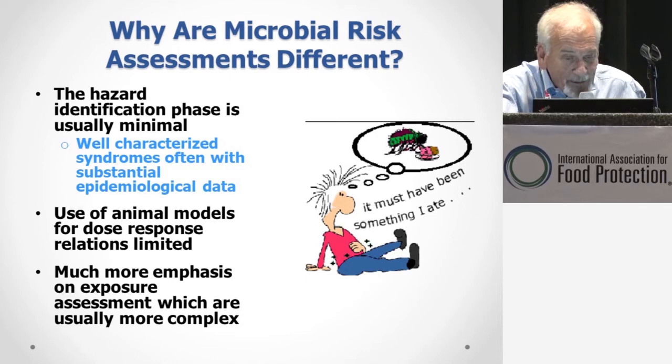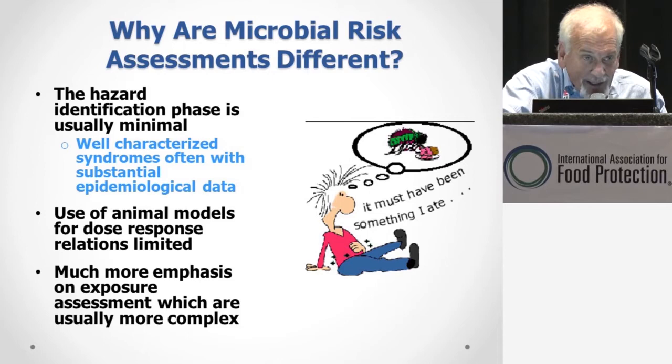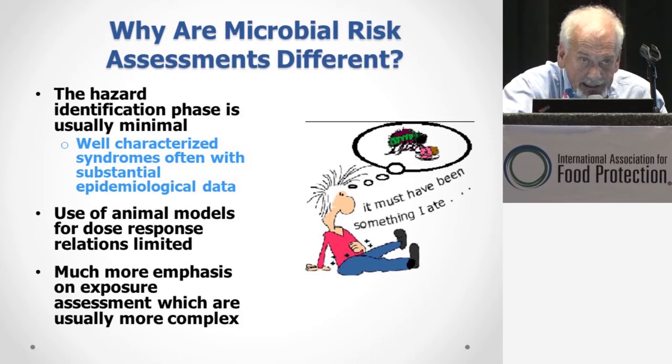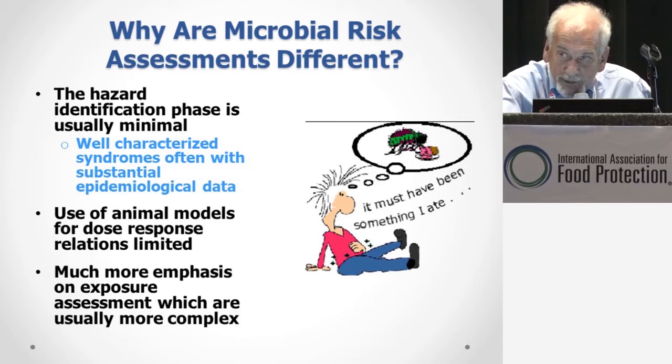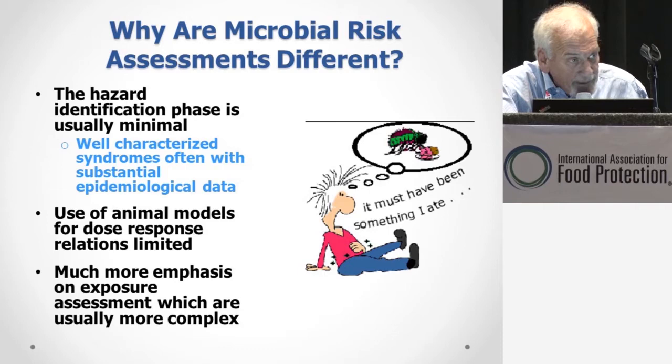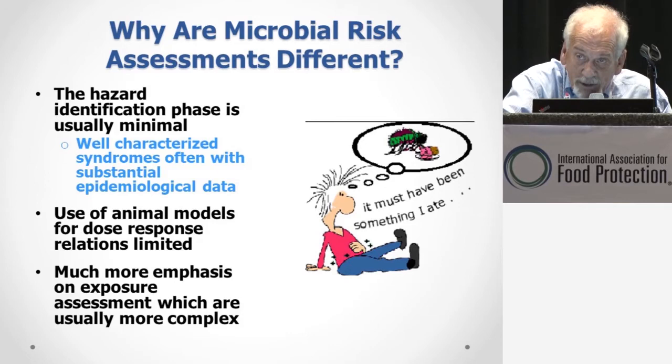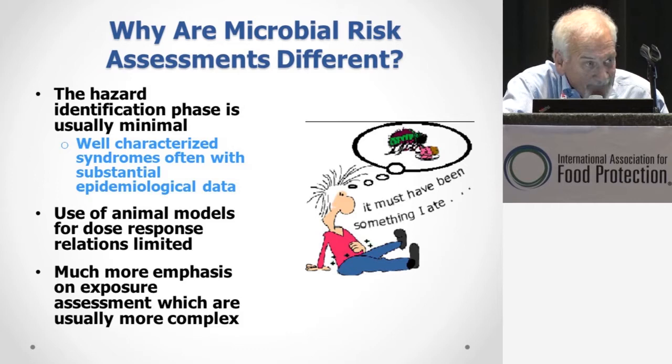Some of the things that are different: in chemical risk assessments you have to figure out and identify what the hazard is, but in most cases when we're dealing with microbiology, this is not the case. Typically we have a huge amount of data that has characterized the syndromes we're dealing with, and we also typically have a substantial amount of epidemiological data. In a few instances we actually have human trials, particularly when done in conjunction with the development of vaccines — the controls from those actually give us information about human susceptibility.